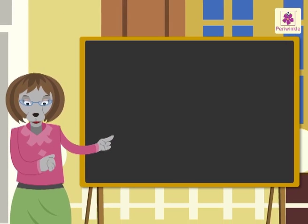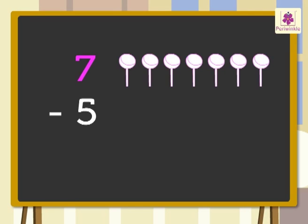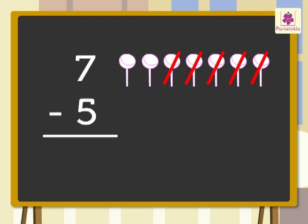Now let's do it once again with another example by drawing lollipops. Subtract seven minus five with the help of lollipops. Draw seven lollipops equal to the minuend. Next, cancel the five lollipops equal to the subtrahend. Now count the remaining lollipops: one, two. So the difference of seven minus five is two.